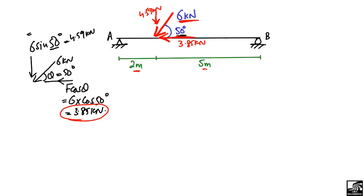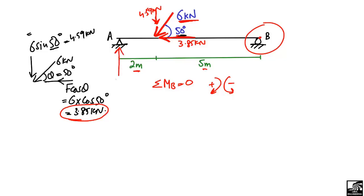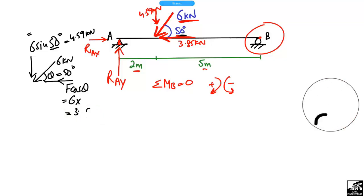Now that we have the two load components, finding the support reactions is straightforward. We take the summation of moments at point B equal to zero. We assume clockwise moment is positive and anti-clockwise is negative. Support A is a hinge support, so it can take both horizontal reaction RAx and vertical reaction RAy.